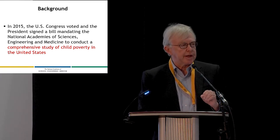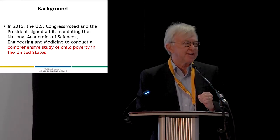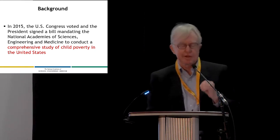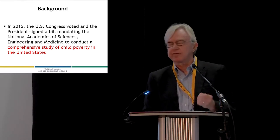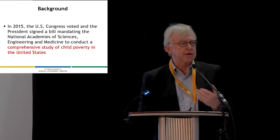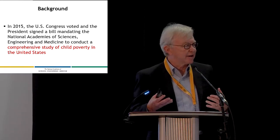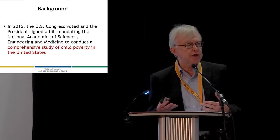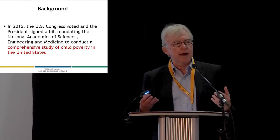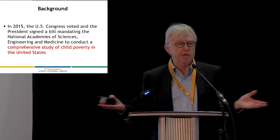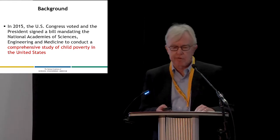We were mandated as a committee — the National Academy was mandated — to find policies that would reduce child poverty by 50 percent within 10 years. The National Academies of Science is a very old institution, formed in the middle of the 19th century, whose goal is to provide expert guidance and advice mainly to the executive branch. Whenever they're asked to study a topic, they bring in experts from around the country and around the world to issue a report.